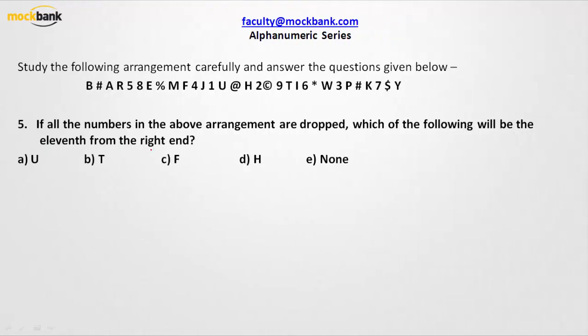Let us solve one more problem. If all the numbers in the above arrangement are dropped, which of the following will be the 11th from the right end? Starting from the right end with numbers removed: first, second, third, fourth, fifth, sixth, asterisk is seventh, eighth, ninth, tenth — and H is going to be the 11th from the right-hand side.